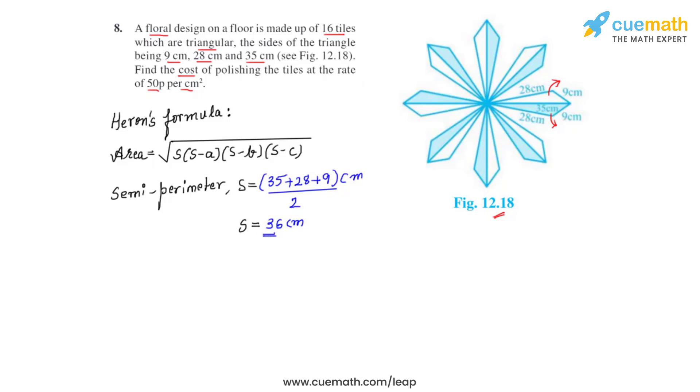Now that we have found out the value of the semi-perimeter, let's find the area of one such triangular tile by substituting these values back into the Heron's formula. So we write under root 36 times 36 minus 35 times 36 minus 28 times 36 minus 9 centimeter square. This gives us under root 36 times 1 times 8 times 27 centimeter square.